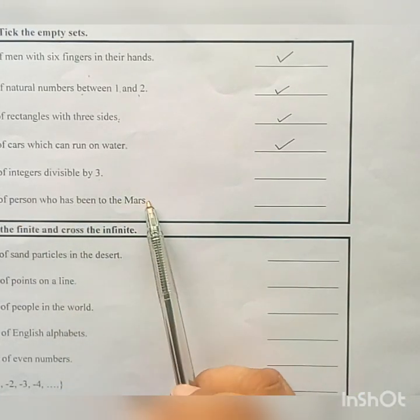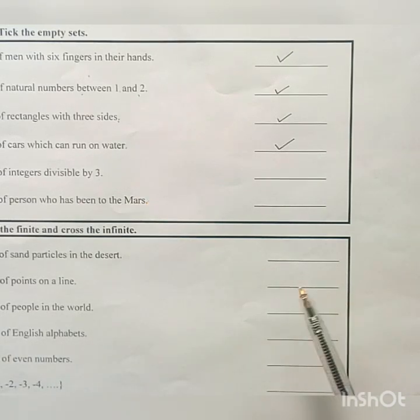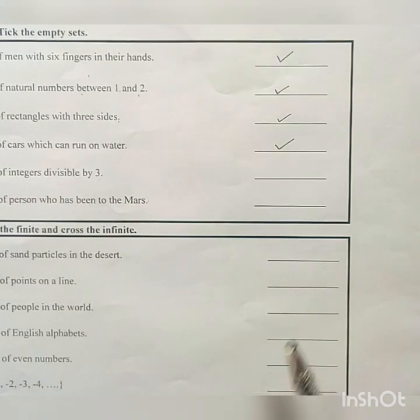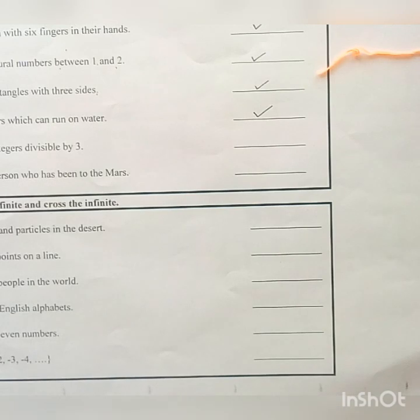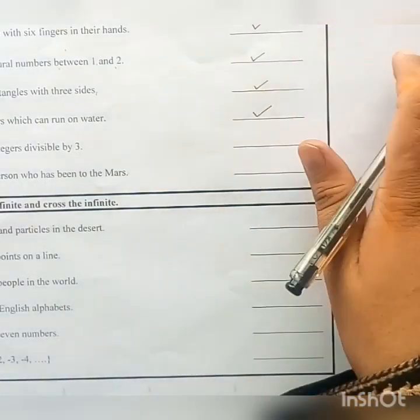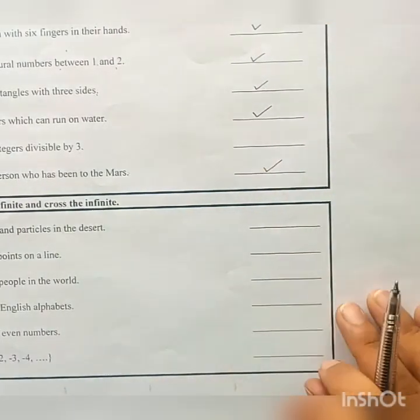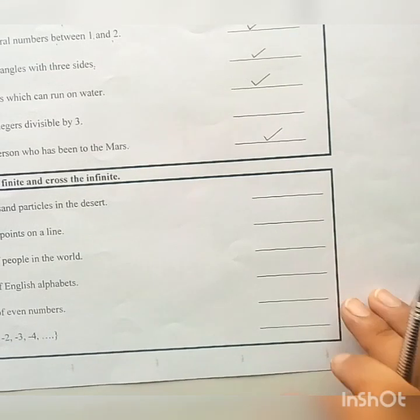Set of person who has been to the Mars. So there is no person who has ever been on Mars. So set of persons who have been on Mars is an empty set.